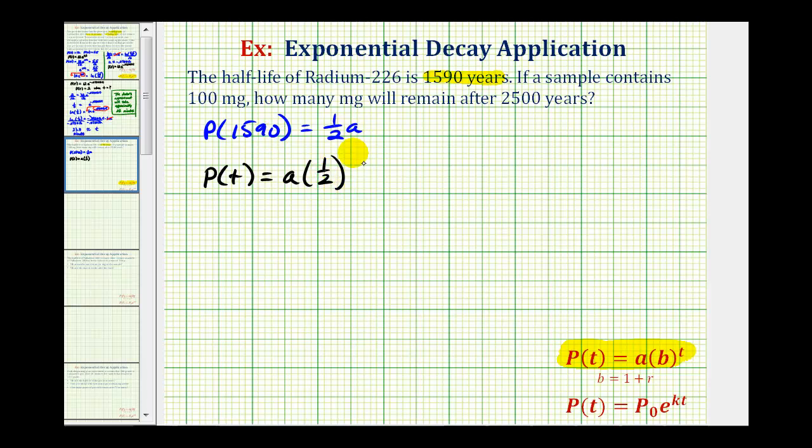So if we make this exponent here t divided by 1,590, notice that when t is 1,590, the exponent would be equal to one, and therefore the function value would be one-half a. So this exponential function will model the decay of radium-226.